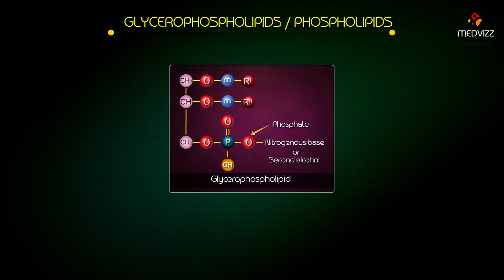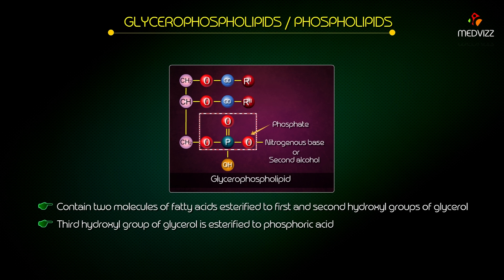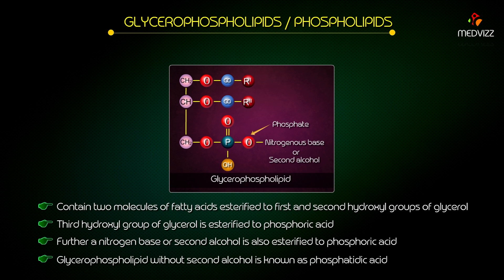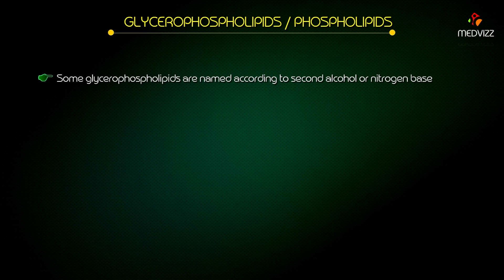Glycerophospholipids or phospholipids contain two molecules of fatty acids esterified to the first and second hydroxyl groups of glycerol. The third hydroxyl group of glycerol is esterified to phosphoric acid. Further, a nitrogen base or second alcohol is also esterified to phosphoric acid. Glycerophospholipid without a second alcohol is known as phosphatidic acid.